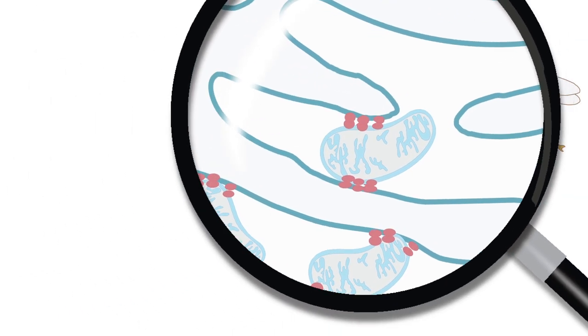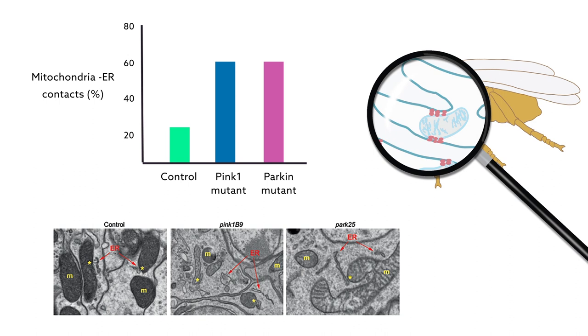Indeed, when the researchers looked at the mutants, they had more of their mitochondria attached to the ER than normal flies.